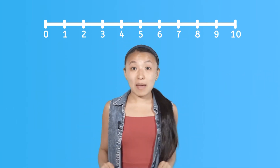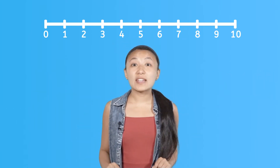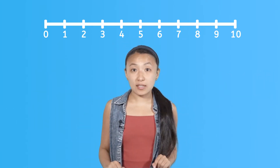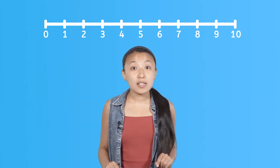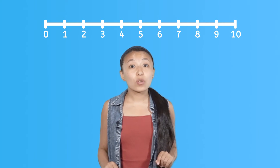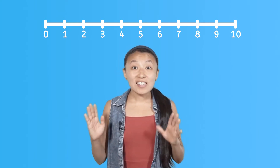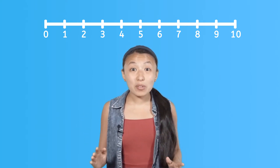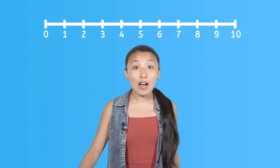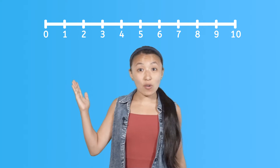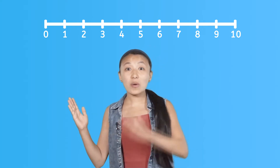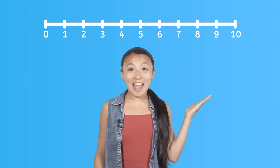This is a math tool called a number line. It helps us see numbers in the order we count them in. Let's use this number line to count from zero all the way up to ten.